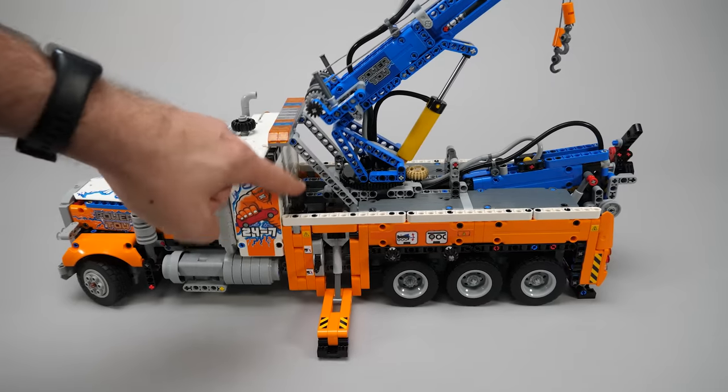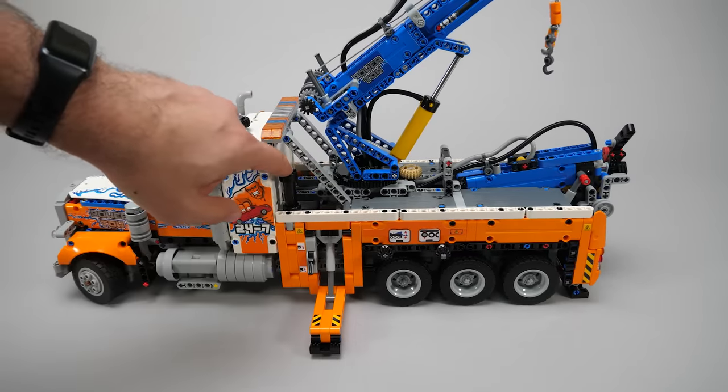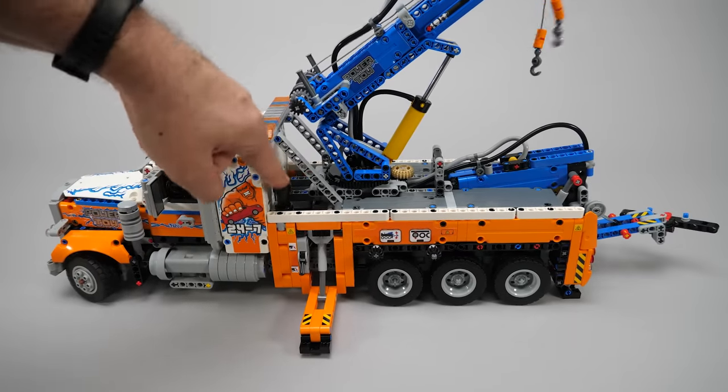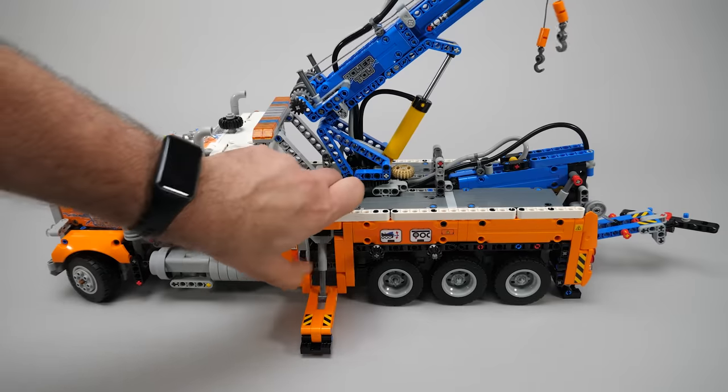Now let's see the pneumatic functions. There's no air tank, the pressure is provided by the pump. There's only one switch on this side, it deploys the tow bar.